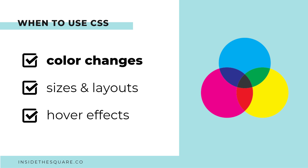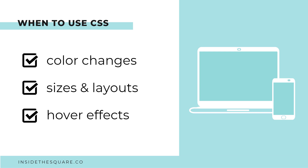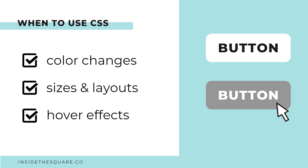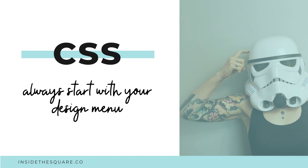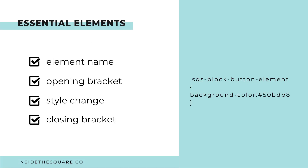When do you use CSS? You can use CSS to make color changes, like changing the color of a button, a particular font, or even a page background. You can use CSS to change sizes and layouts — for example, making something display differently on mobile versus desktop. You can also use CSS to create cool hover effects, like changing the color of a button on hover. That said, always start with your design menu first to see if you can make the change before trying custom CSS.